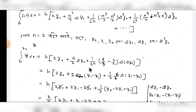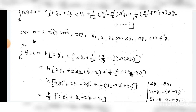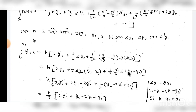Minus y1 minus y0. Plus 1 by 2 factorial, 1 by 2. Calculation: 4 by 6 del del del y0, y1 minus y2, y1 minus y2.